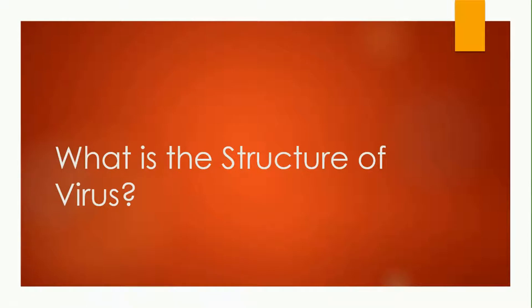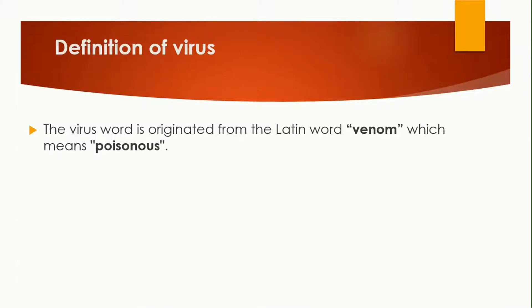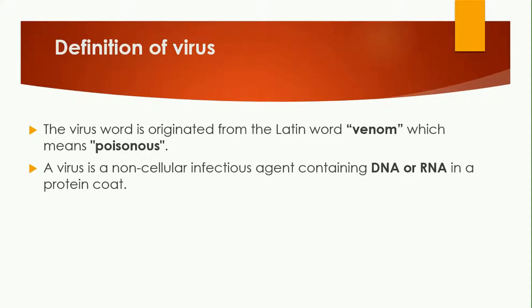Hello learners, welcome back to Amit Coaching. I am Dr. Anna. Today we are going to study about the structure of a virus. The word 'virus' actually originated from the Latin word 'venom,' which means poisonous. A virus is a non-cellular infectious agent which contains DNA or RNA in a protein coat. Non-cellular means it is not considered a cellular organism. It is an infectious agent that, if it enters into a living organism, will definitely cause a disease.